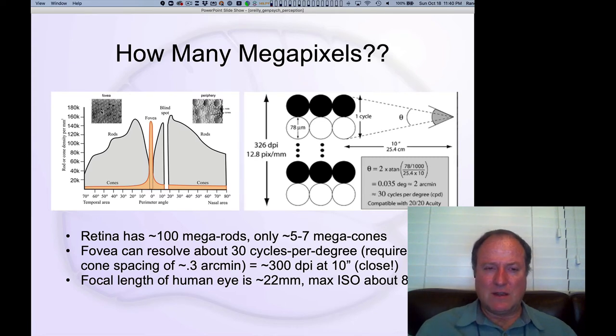Cones are the color-selective transducers. They have three different frequencies of light that they respond to. We'll look at that in a second. Your color vision is really concentrated in this very narrow, one or two degree band of very dense receptors for color in the fovea.